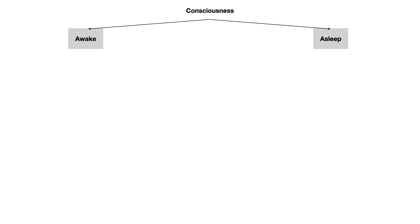I think the best way to approach this is to ask: what is the level of consciousness? You've got two options - you can either be awake or you can be asleep. Let's start on the left side and talk about the awake conscious state. When you're awake, you can be two types of awake. You can either be alert or you can be tired. Either you're able to have conscious mental effort, in which case you're awake alert, or you're dozing off and getting tired - in that case you're awake tired.